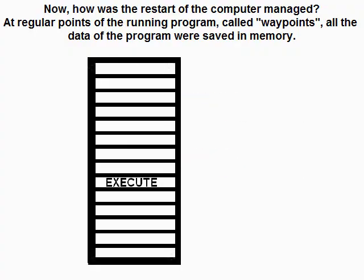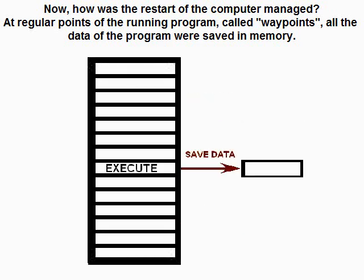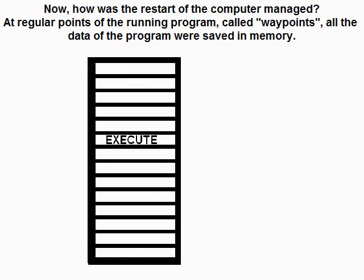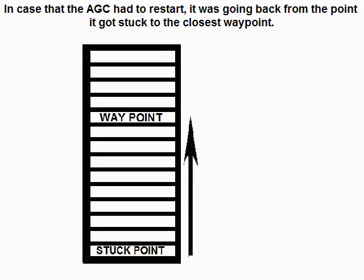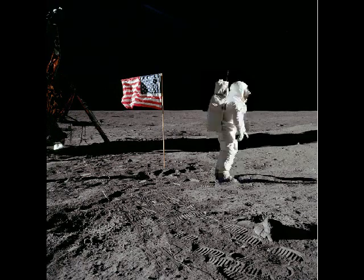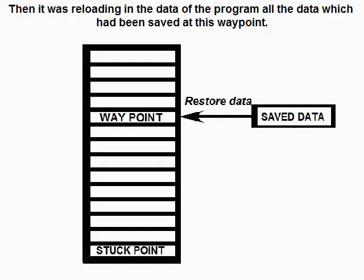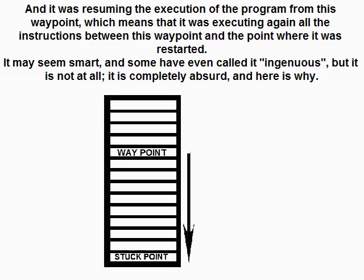How was the restart of the computer managed? At regular points of the running program called waypoints, all the data of the program was saved in memory. In case the AGC had to restart, it would go back from the point it got stuck to the closest waypoint, reload all the data saved at that waypoint, and resume execution from that waypoint — meaning it would re-execute all instructions between the waypoint and the point where it was restarted.